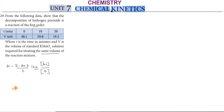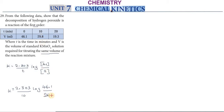For t = 10 minutes, the initial value a₀ = 46.1 and a = 29.8. So k = 2.303 / 10 × log(46.1 / 29.8). Calculating this gives k = 0.04365 per minute.